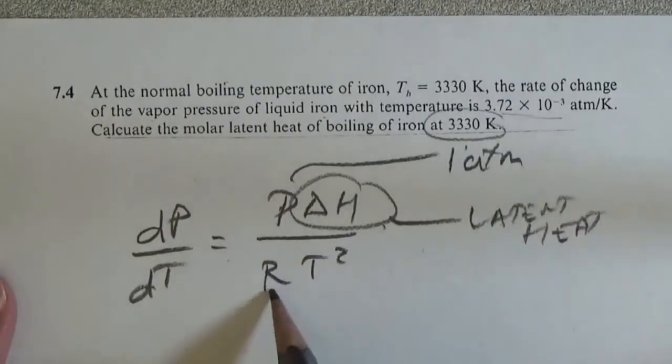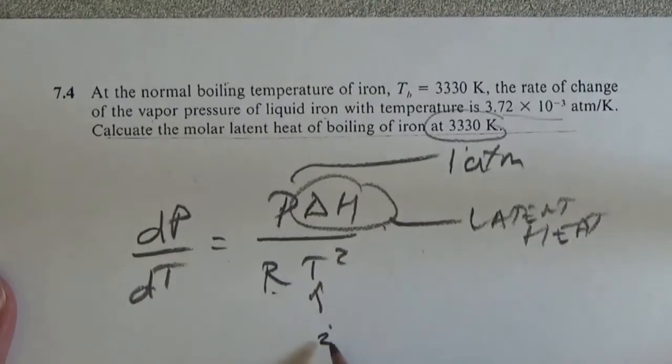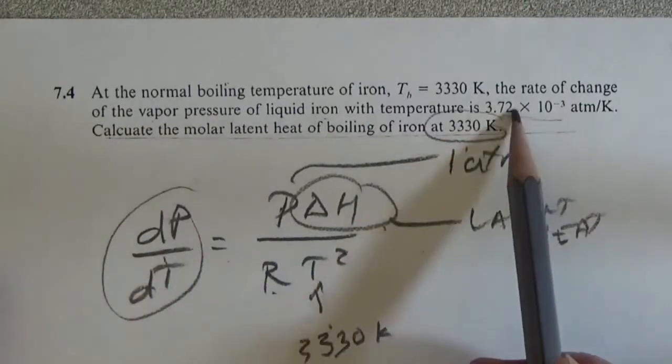Now, we have the gas constant. The temperature is going to be 3330 K. This is given in the problem.